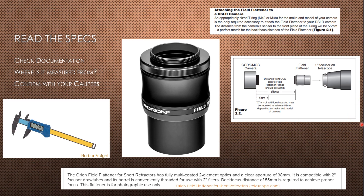The second step is figuring out where the distance is measured — from the top of the threads, the bottom of the threads, or from an optic inside the device? For the camera, where exactly is the sensor? The sensor is not at the front of most cameras; it's recessed. If you can't get an illustration or specification of exactly where it is, you must measure it. Sometimes manufacturers count threads and sometimes they don't, so it's best to get your calipers out and confirm everything is as you expect. Measure very carefully — you don't want to scratch a sensor or an optic.